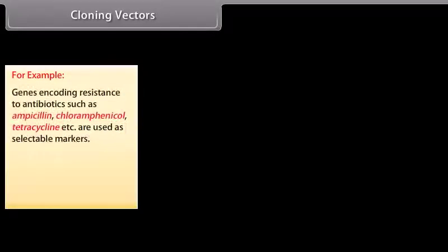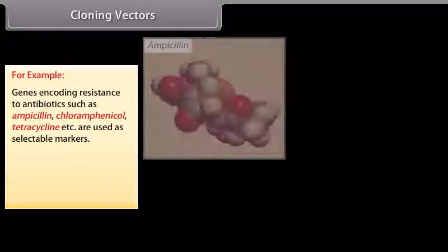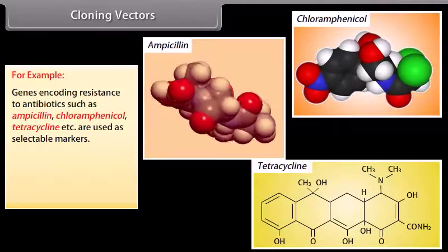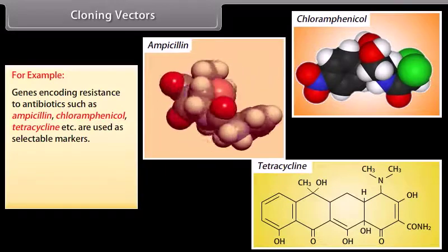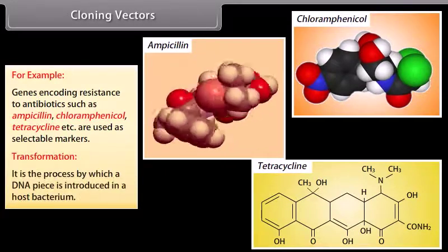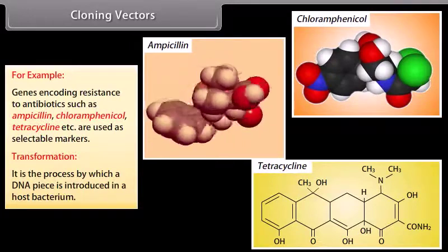genes encoding resistance to antibiotics such as ampicillin, chloramphenicol, tetracycline, etc. are used as selectable markers. Transformation. Transformation. It is a process by which a DNA piece is introduced in a host bacterium.